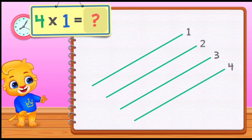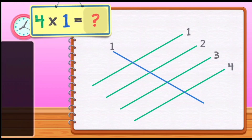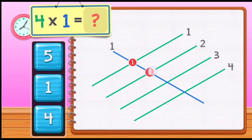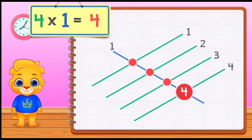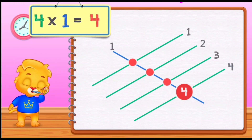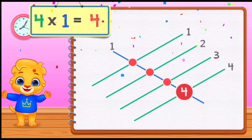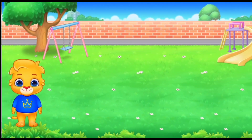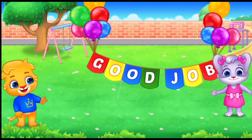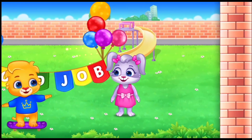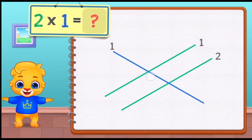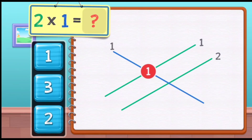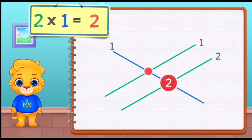Four times one equals four. One, two, three, four. Four times one equals four. Two times one equals two.